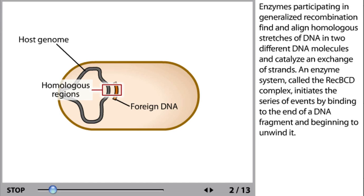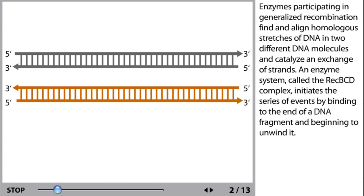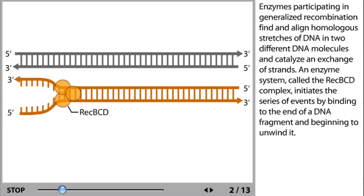Enzymes participating in generalized recombination find and align homologous stretches of DNA in two different DNA molecules and catalyze an exchange of strands. An enzyme system called the RecBCD complex initiates the series of events by binding to the end of a DNA fragment and beginning to unwind it.